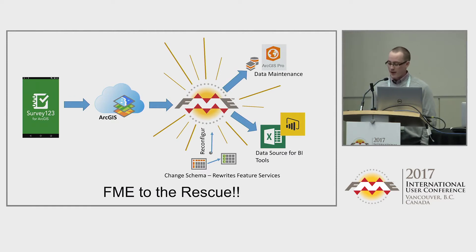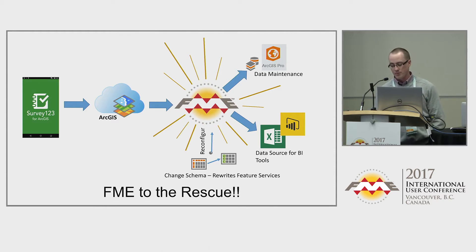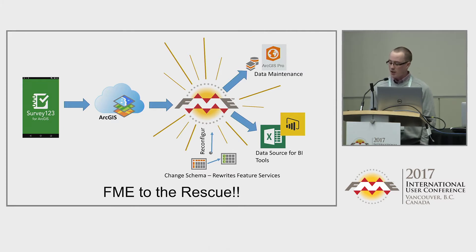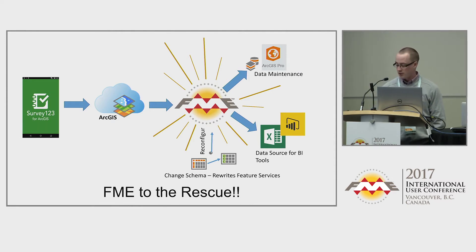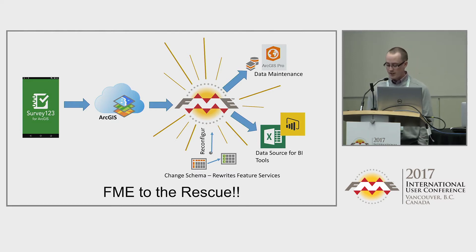The FME process was categorized into two workflows: an initial process and an iterative process. The initial workflow can be broken down into two core themes — altering of the schema and merging of geometries. It extracts the source data from the ArcGIS Online repository and through altering of attributes, creates the schema the client desired. This starts with removal of the default object ID and creation of a parent row ID used to merge the different forms together.